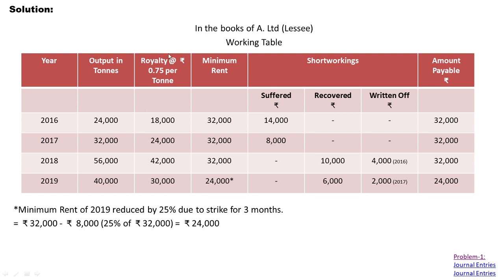Now we calculate the royalty. The rate of royalty is Rs. 0.75 per ton. So output in tons multiplied by rate of royalty: 24,000 × 0.75 = 18,000. So royalty for 2016 is Rs. 18,000.